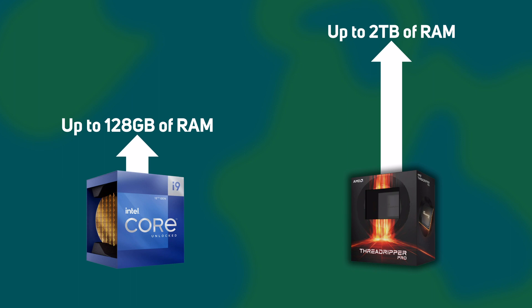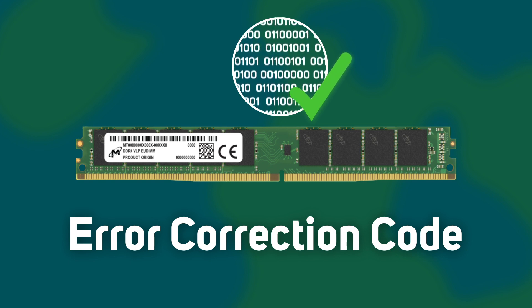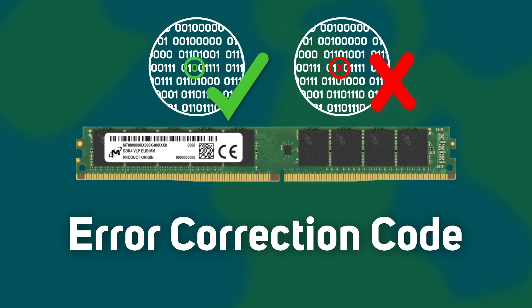Full tower Threadripper Pro workstations also support much more memory than mid tower Core i9 workstations — up to 2 terabytes of RAM versus just 128 gigabytes — which is essential for running large CAE simulations and renders that simply won't fit inside 128 gigabytes. Threadripper Pro also has more memory bandwidth thanks to an 8-channel memory controller versus the dual-channel controller in Core i9 CPUs. Additionally, Threadripper Pro CPUs support ECC (Error Correction Code) memory, which checks and corrects memory errors on the fly, protecting your applications from data loss or crashing — preventing incorrect CAE results, wrong render pixels, or losing your whole project to a memory error.